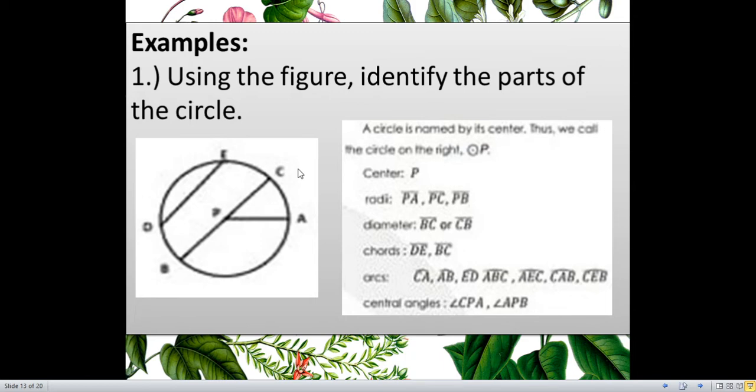So, for arcs, we just combine all, starting from the semicircle, minor arc, major arc. So, we have, for the minor arc, arc CA, arc AB, arc ED. For the semicircle, we can have, no, rather, for the major arc, we have arc ABC. This is the major arc, arc ABC. Arc AEC.